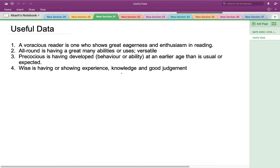An all-round person is someone who has many abilities and is versatile. A precocious person is someone who has developed a behavior or ability at an earlier age than is usual or expected. And a wise person is someone who shows great experience, knowledge, or good judgment.